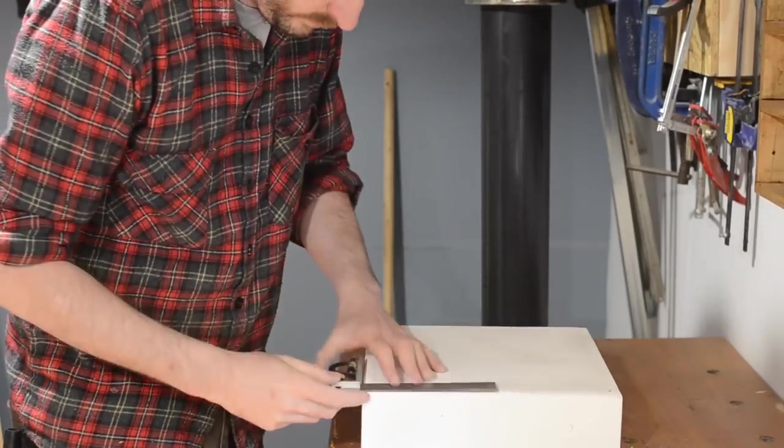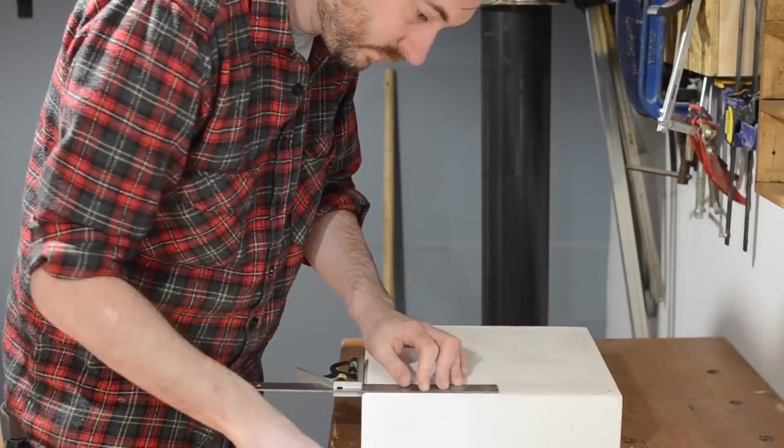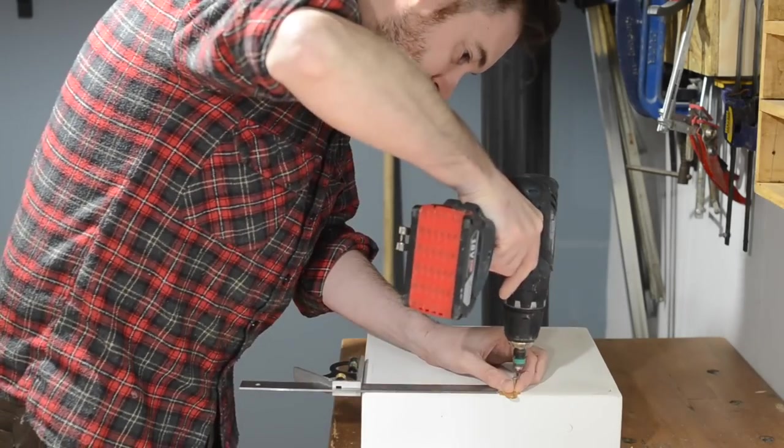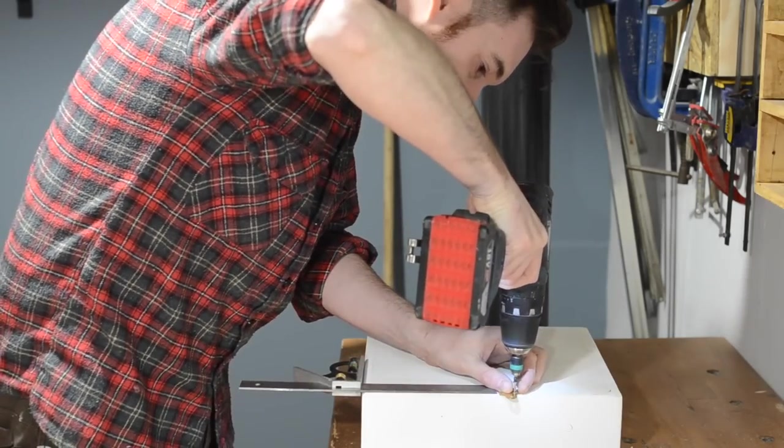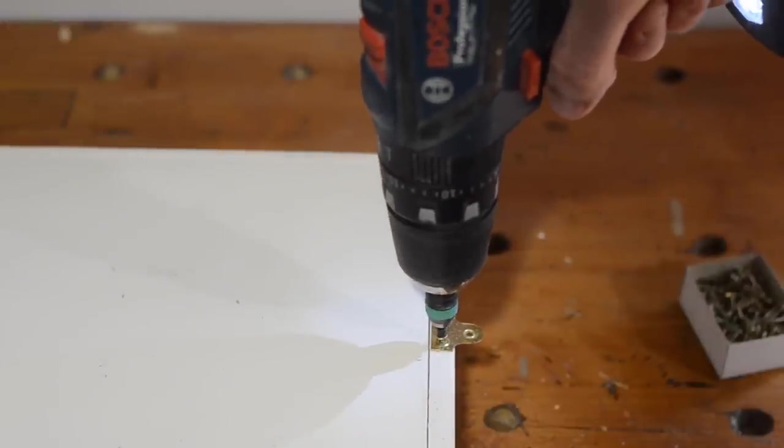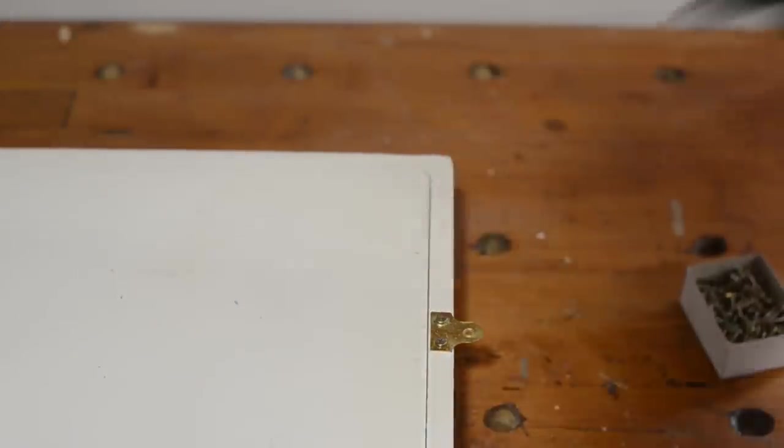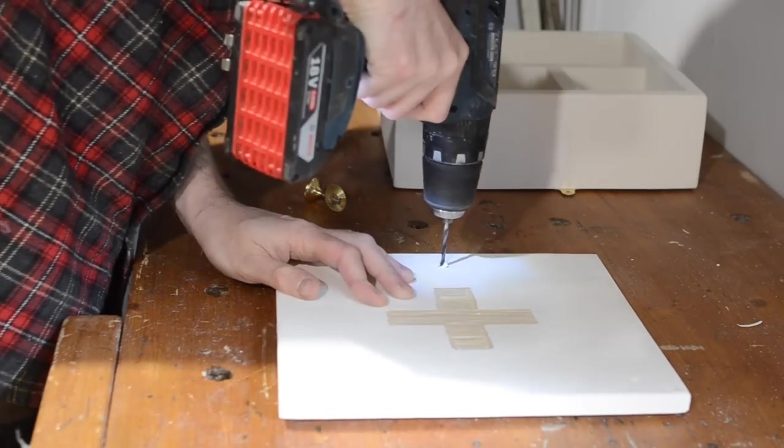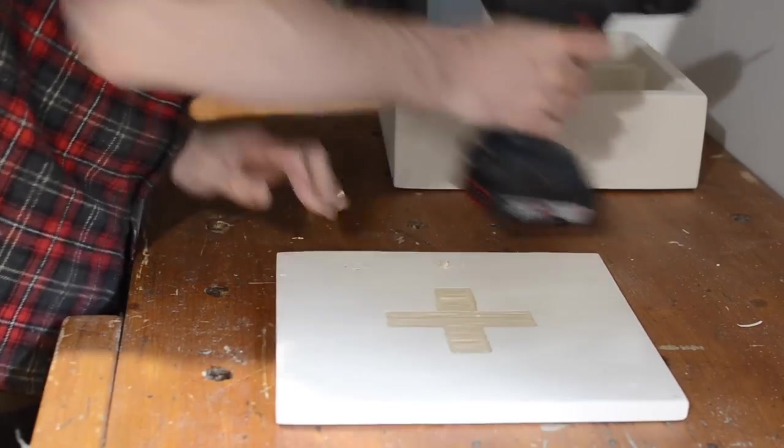I hadn't actually thought how I was going to attach this to the wall, so I just decided to use some of these brass hanging plates. A couple of screws to put them on, nice and easy. As I got a brass hinge and brass hanging plates, I thought I'd add a brass knob to open the door.